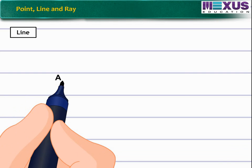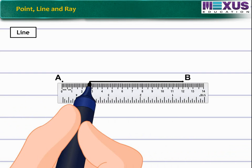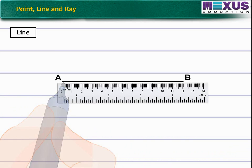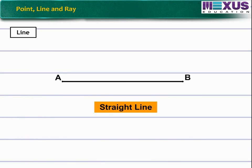Mark a point A and B on a paper. Draw a line touching both using ruler. This is a straight line. Put an arrowhead at each of its end. The figure thus obtained is called line AB. It can be denoted by line AB.